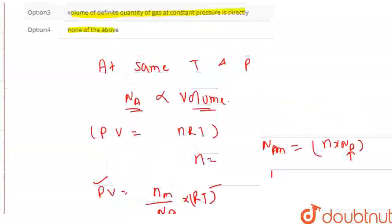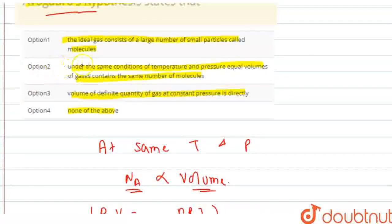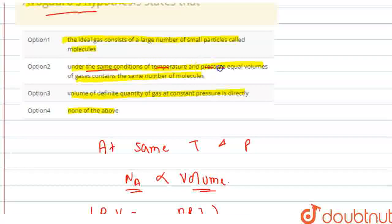So if we look at the options, option 2 is: Under the same condition of temperature and pressure, equal volume of gas contains same number of molecules. So if we look at option B, that will be the correct answer. Hope you understand, thank you for watching.